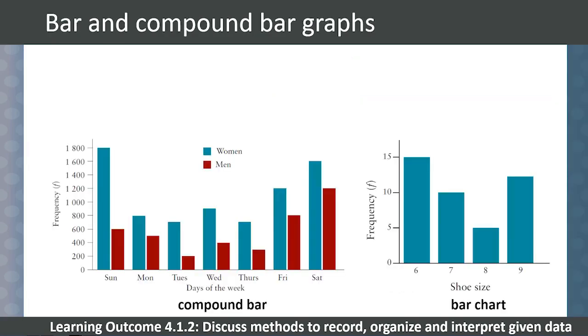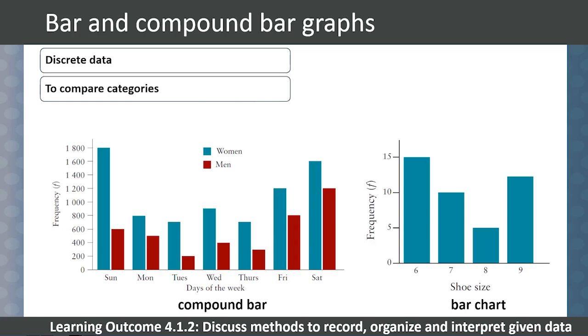Bar graphs and compound bar graphs are used for discrete data, where we want to compare the amounts in different categories. This gives a useful visual comparison method. The bars in the chart must never touch each other, because the data is discrete and not continuous. There is always a gap between bars.